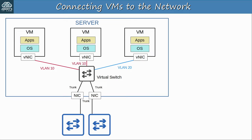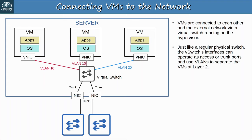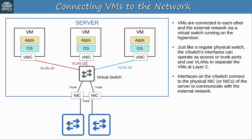Now, regarding virtual networks, I'm just going to briefly explain how VMs can connect to each other and to the external network outside of the physical host. VMs are connected to each other and the external network via a virtual switch running on the hypervisor. The hypervisor will provide a virtual switch to use, or alternatively you can run a Cisco virtual switch on the hypervisor. Just like a regular switch, the vSwitch's interfaces can run as access or trunk ports, and use VLANs to separate the VMs at Layer 2. Notice that in this example two of the VMs are in VLAN 10 and one is in VLAN 20. Interfaces on the virtual switch then connect to the physical NIC or NICs of the server to communicate with the external network.